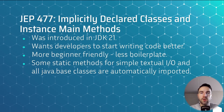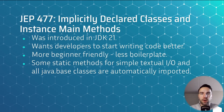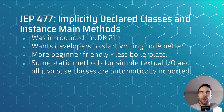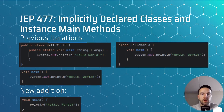JEP 477 aims to allow developers to start writing code faster without the well-known 'public static void main' boilerplate, and will also make Java more beginner-friendly. It was already introduced in JDK 21, had a second preview in JDK 22, and is now back for its third preview. Implicitly declared classes now also import static methods for simple textual I/O with the console, and all public top-level classes from the java.base module are automatically imported.